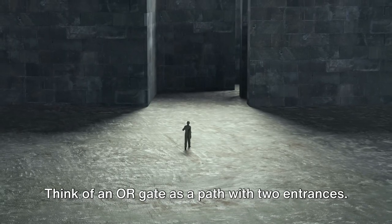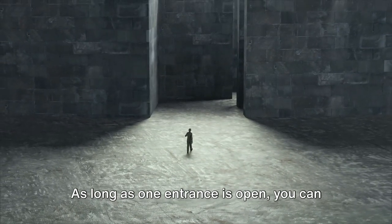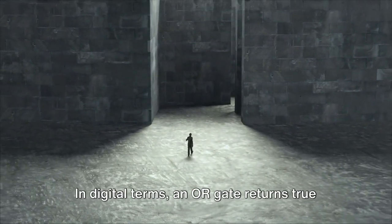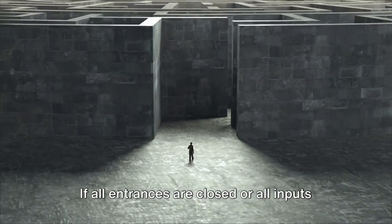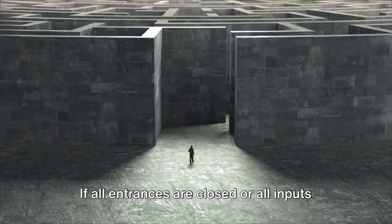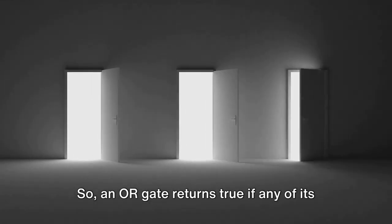Now let's shift our attention to the OR gate. Think of an OR gate as a path with two entrances. As long as one entrance is open, you can pass through. In digital terms, an OR gate returns true if at least one of its inputs is true. If all entrances are closed or all inputs are false, the output is also false. So an OR gate returns true if any of its inputs are true.